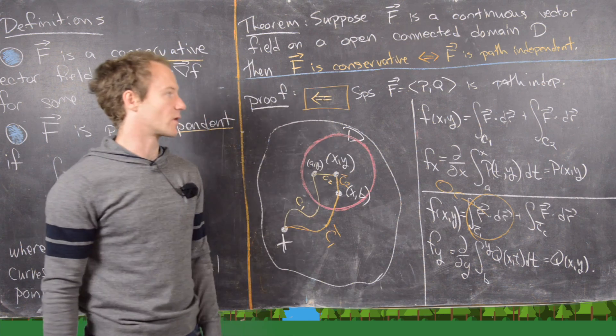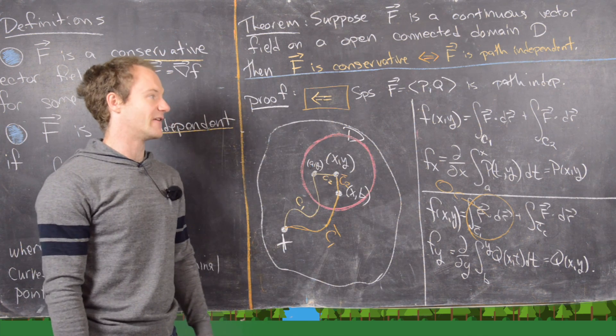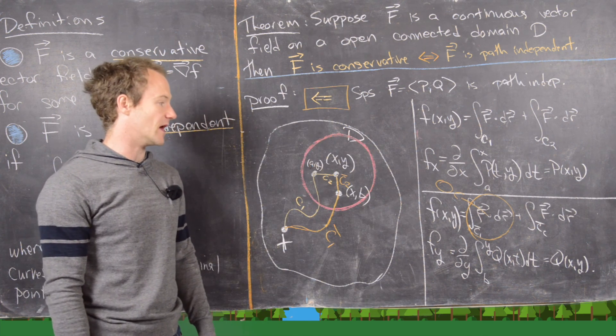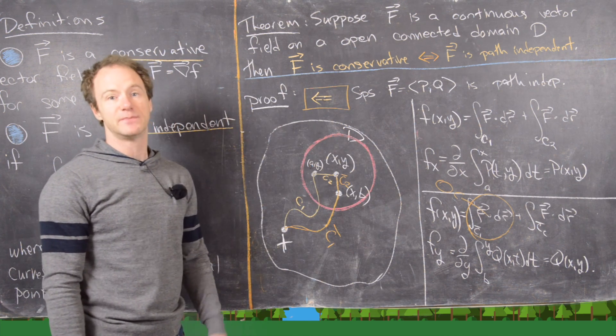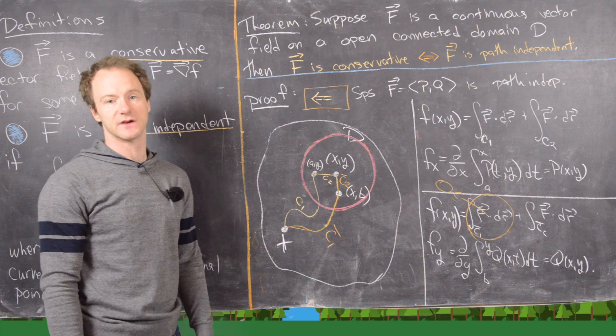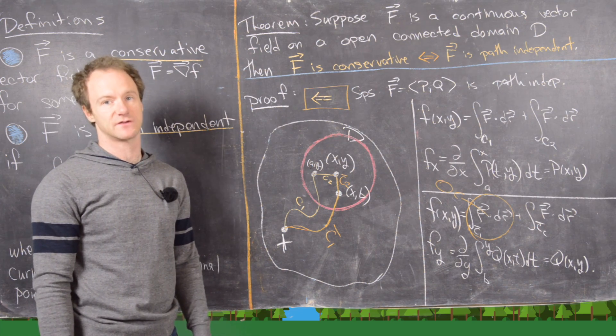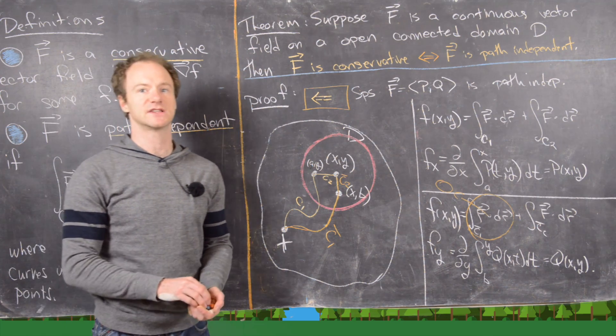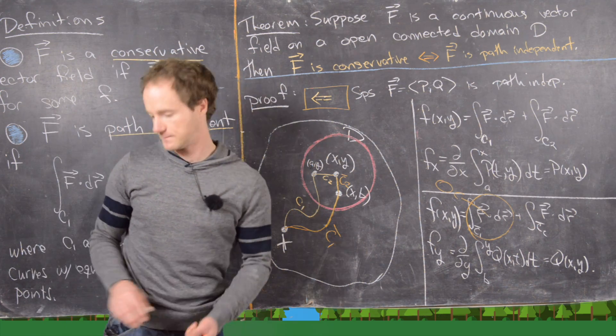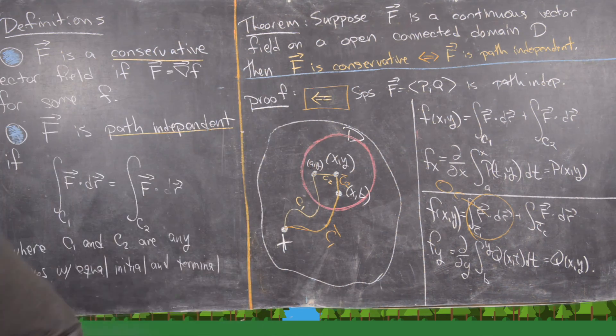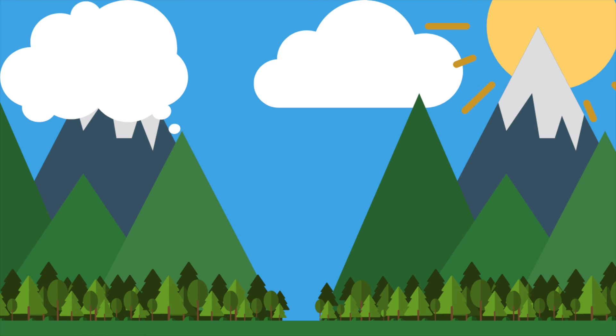So we have shown that the partial of little f with respect to x is P(x, y) and the partial with respect to y is Q(x, y). This means we have constructed a potential function for our vector field, proving that F is conservative and completing both directions of the proof.